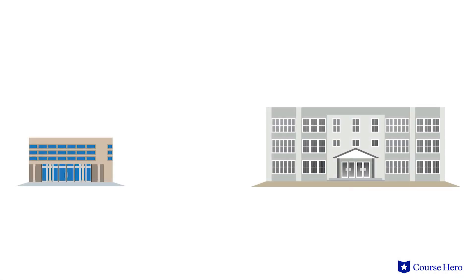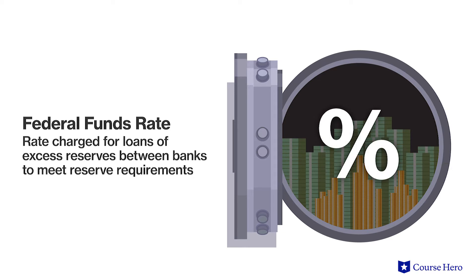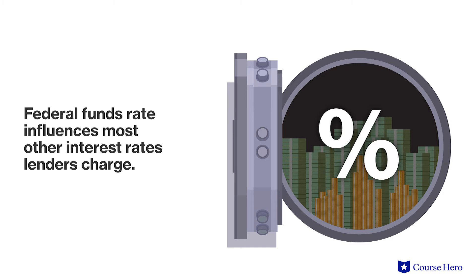If a bank has insufficient reserves, it can borrow funds from another bank with excess reserves. The interest rate on these loans is called the federal funds rate, or the rate charged for loans of excess reserves between banks to meet reserve requirements. In turn, the federal funds rate influences most of the other interest rates lenders charge.